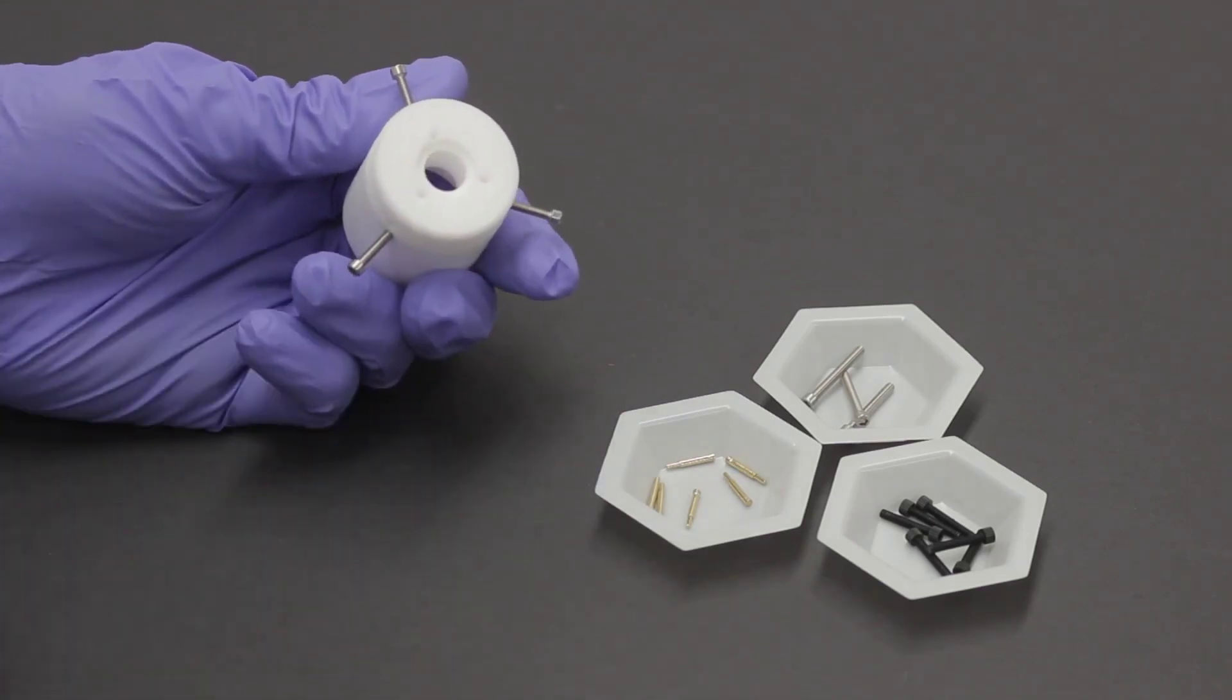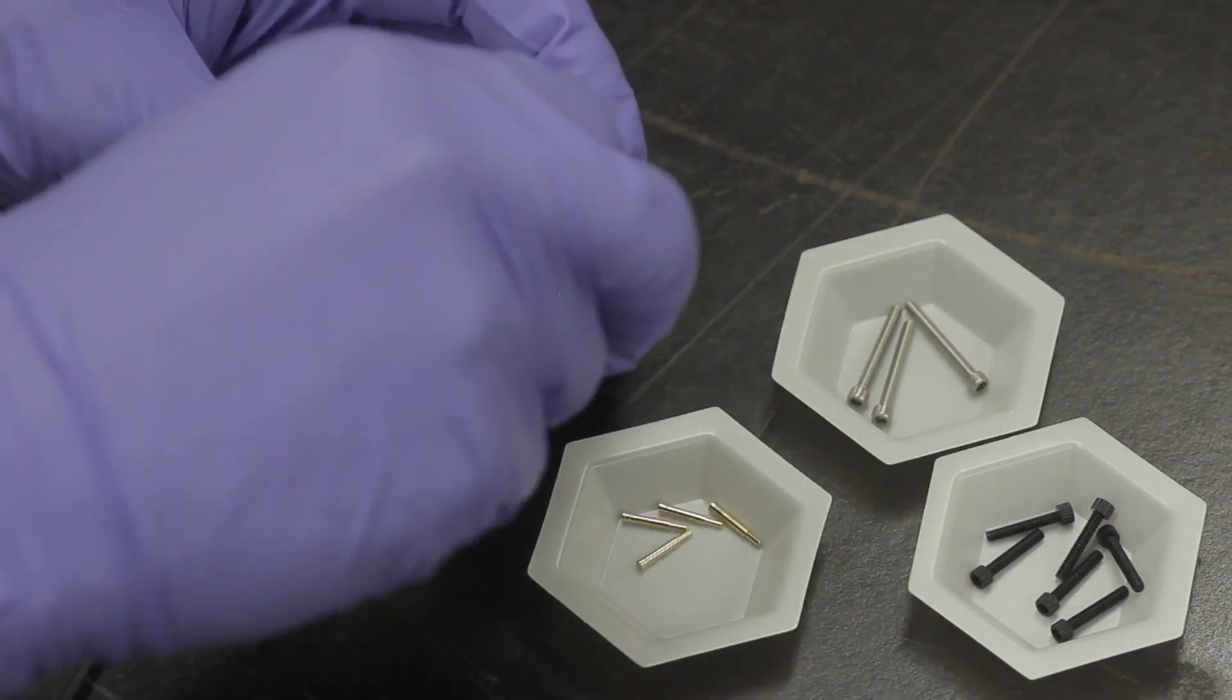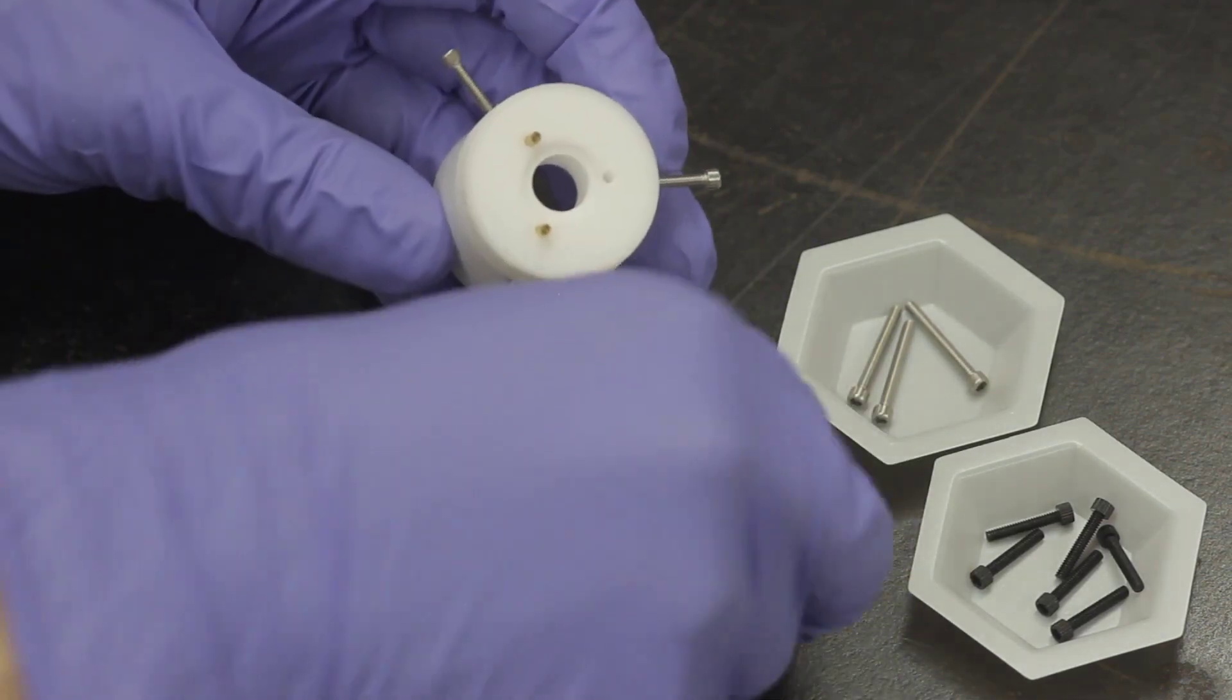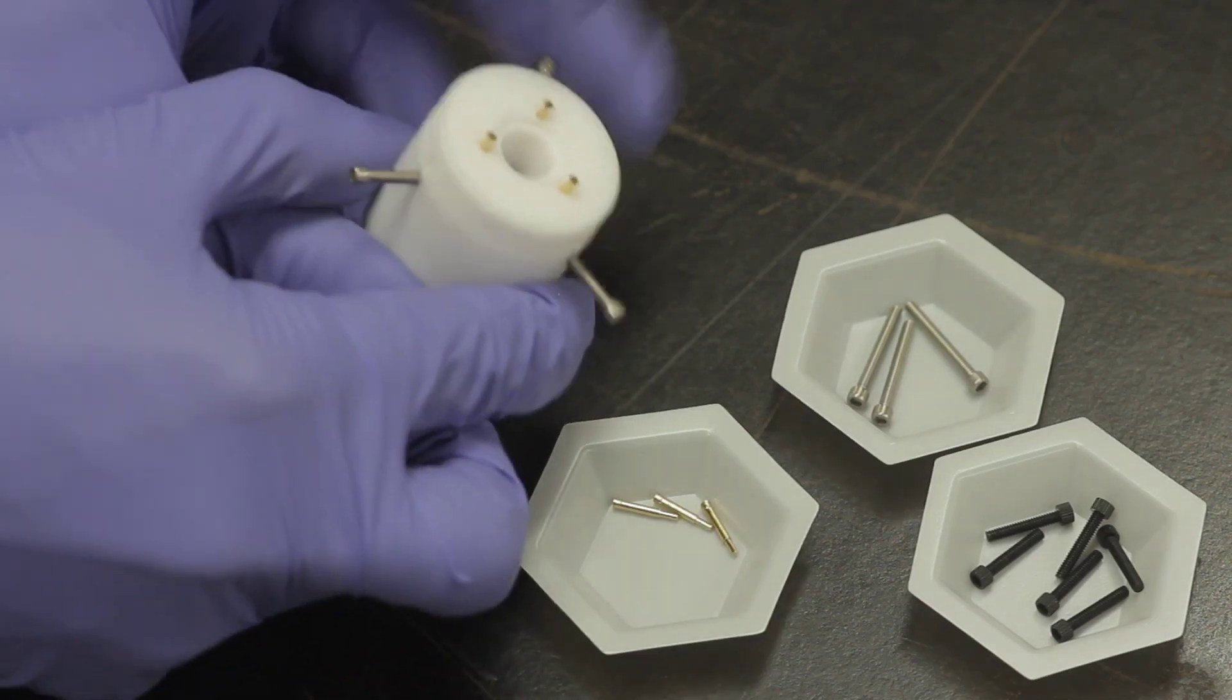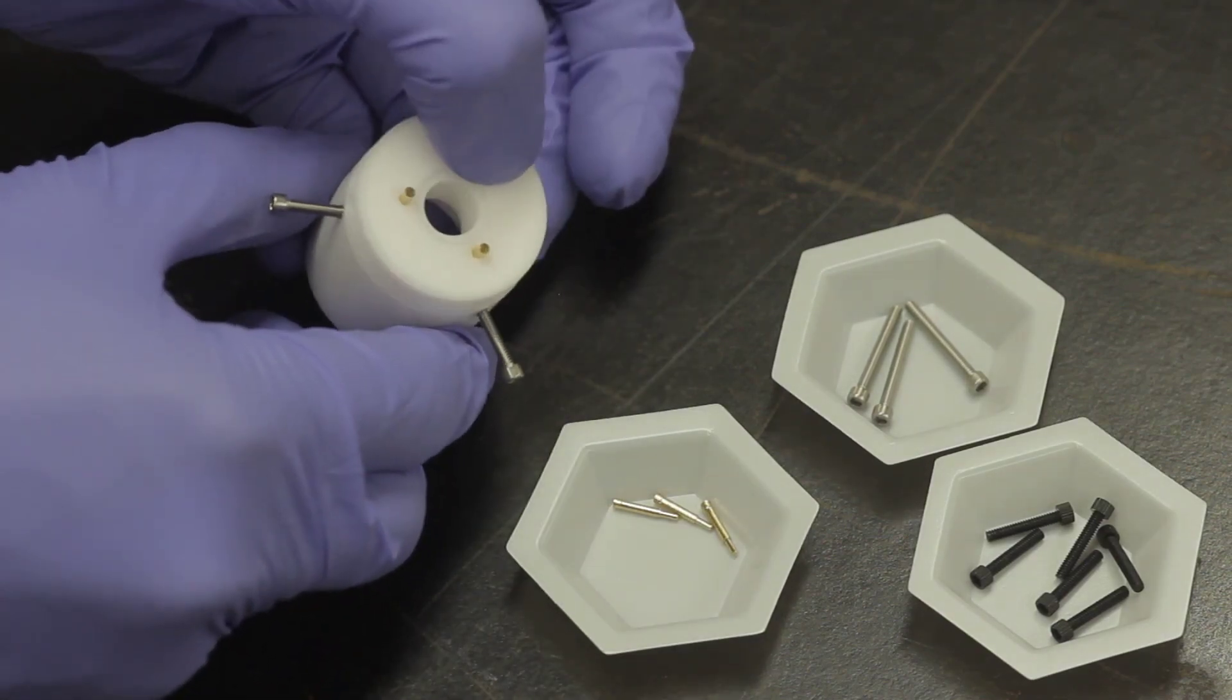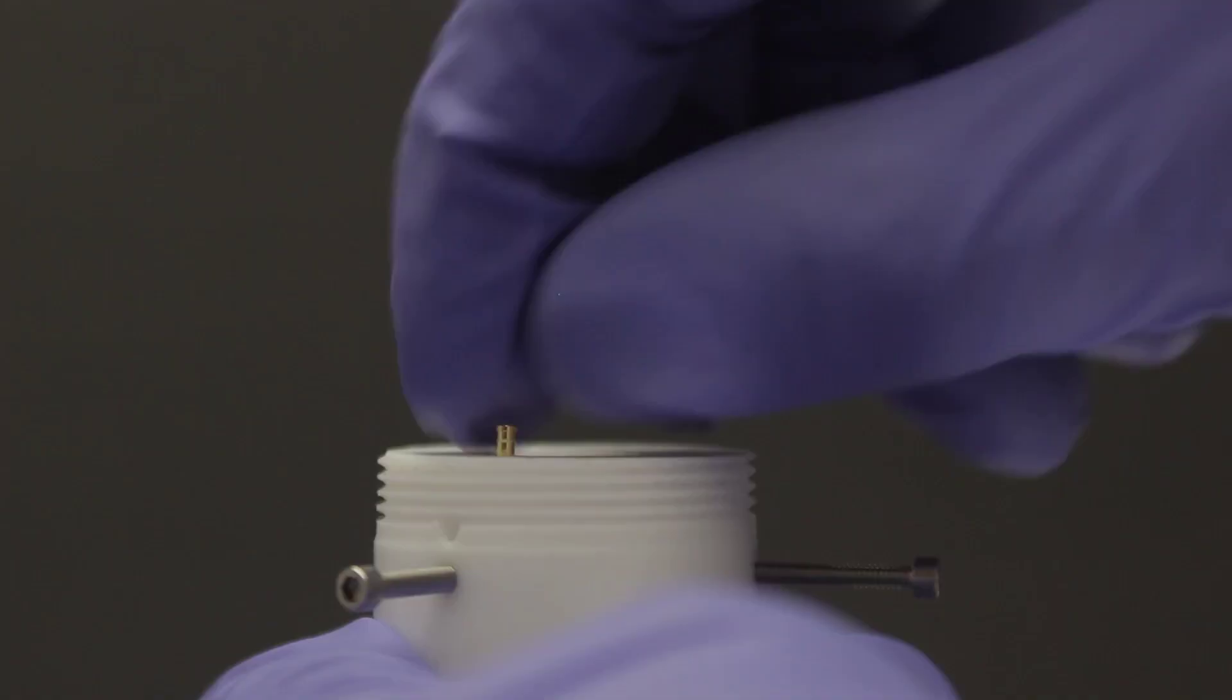Next, install a spring-loaded pin into each of the holes in the bottom of the cell base. The pins should protrude upwards from the surface. Check the spring action by depressing each pin. It should compress easily and extend as soon as pressure is removed.